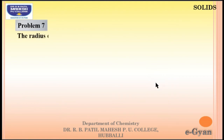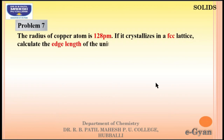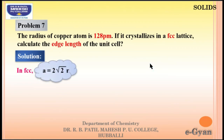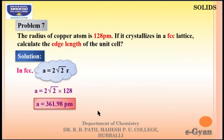Seventh numerical: the radius of a copper atom is 128 pm. If it crystallizes in an FCC lattice, calculate the edge length of the unit cell. In FCC, A = 2√2 R. Substituting R = 128 pm directly, we get A = 361.98 pm.